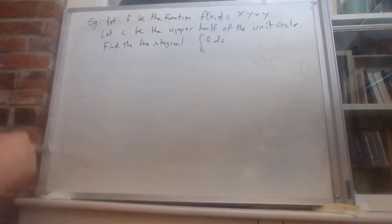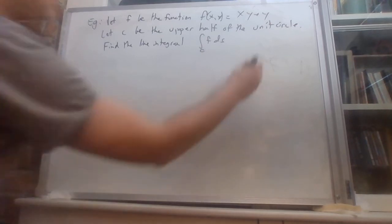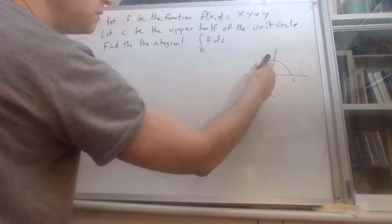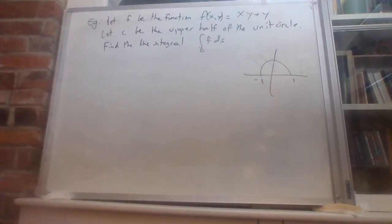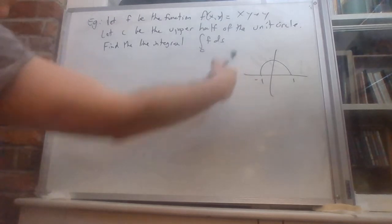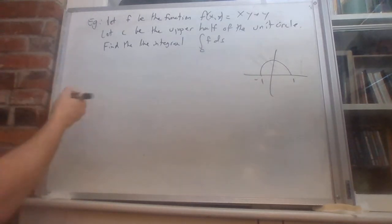Let's do an example. Let's set it up—we won't do the integral all the way out. Let f be the function xy plus y, and let C be the upper half of the unit circle. There's the upper half of the unit circle. We've got this function xy plus y. We want to integrate it over this curve. First, I'll write the formula.